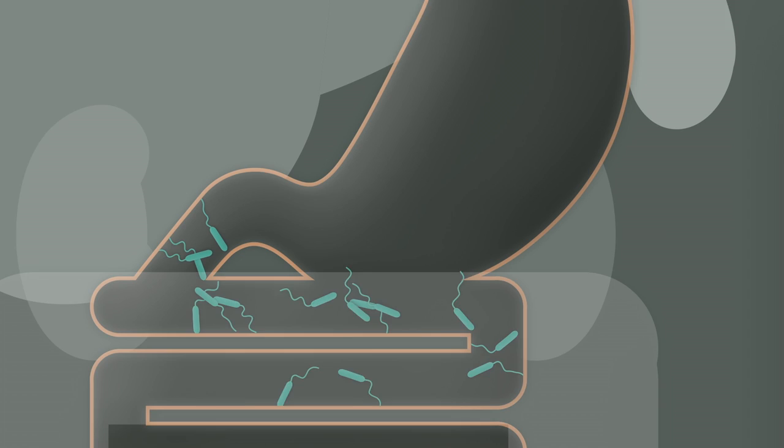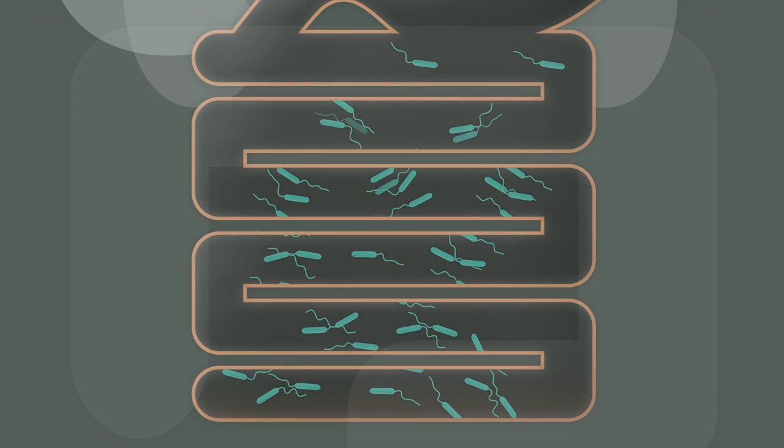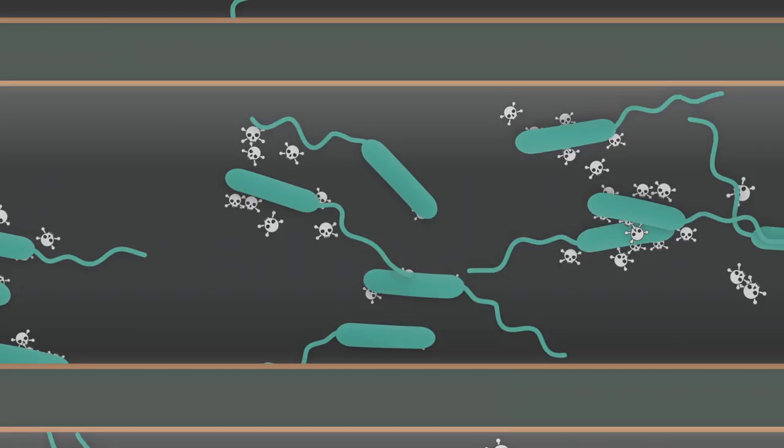After passing through the stomach, the Vibrio multiply in the small intestine and secrete a toxin, which provokes a series of biochemical reactions.